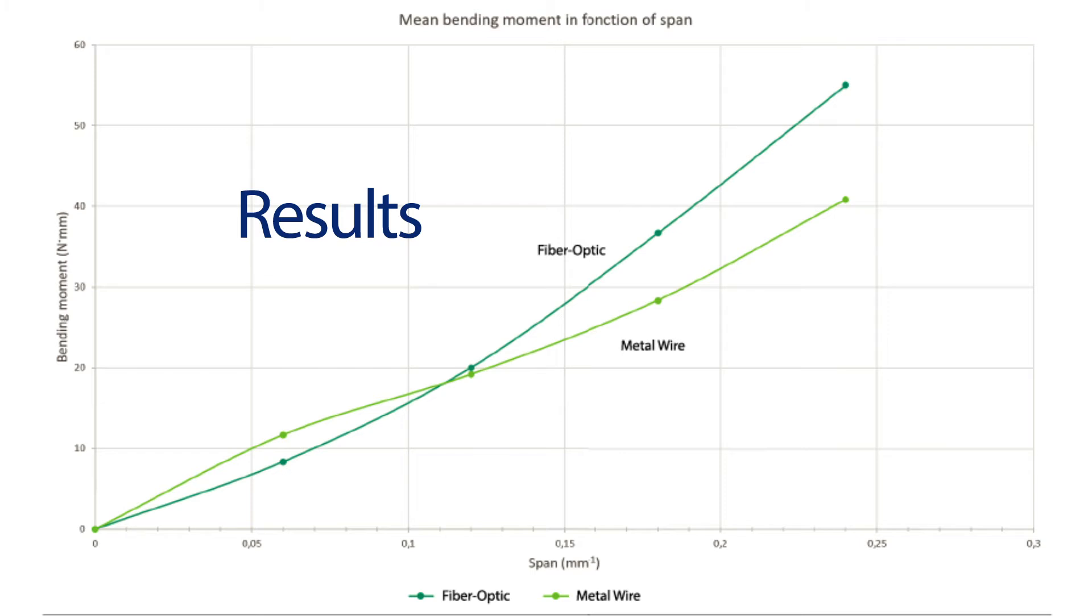We can see on the graphic of the bending moment as function of span that fiber optic deformed linearly but the metal wire did not. We can also see on this graphic that the slope value for the metal wire is smaller than for the fiber.